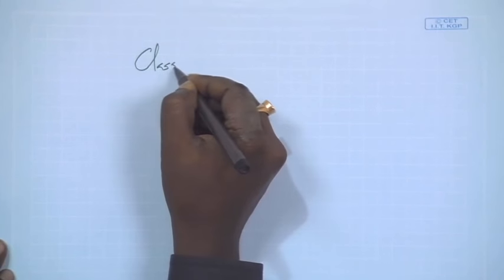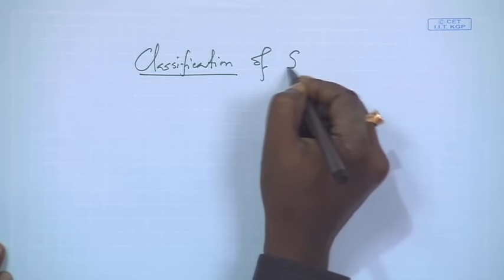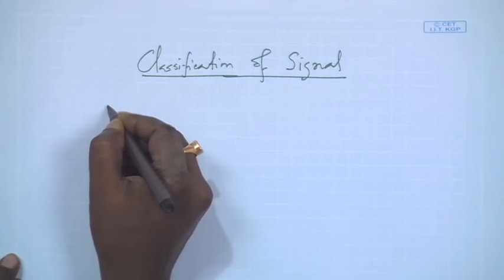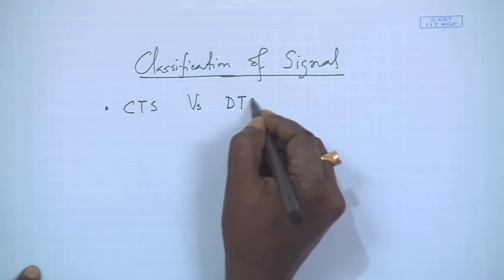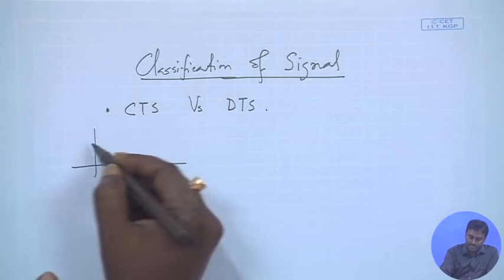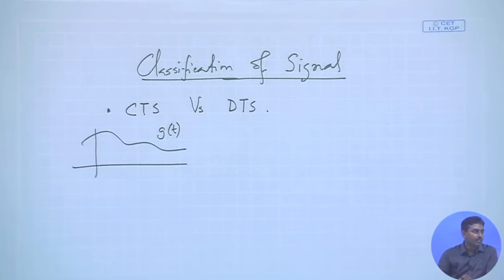Now let us classify signals. One way is based on the independent variable — time. We can have a continuous-time signal, where the signal is defined at every time instance, or a discrete-time signal, where the signal is only defined at specific time instances. The typical example of a continuous-time signal is g(t) or a sinusoidal.